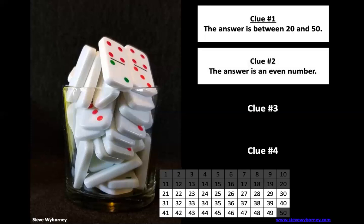Clue number two: the answer is an even number. If you remember, even numbers are numbers that can be equally divided into two. So numbers that end with a two, four, six, eight, or zero are even numbers.